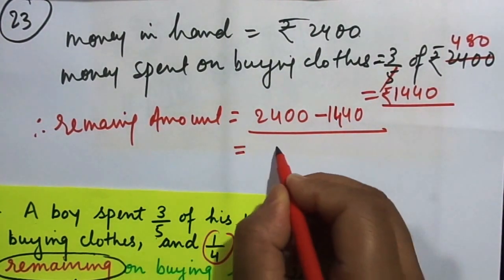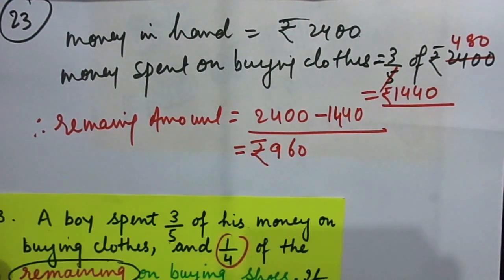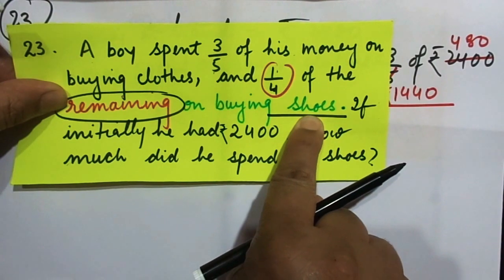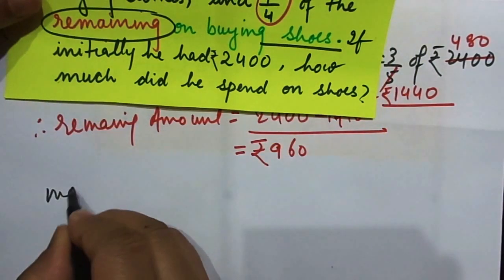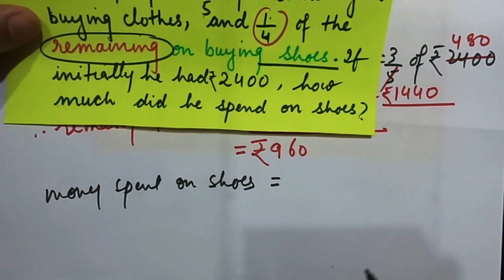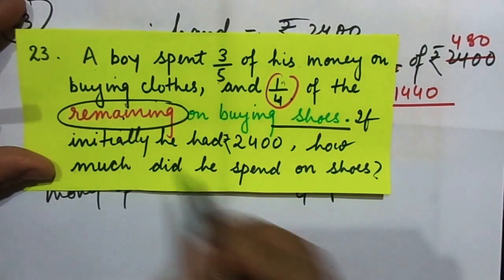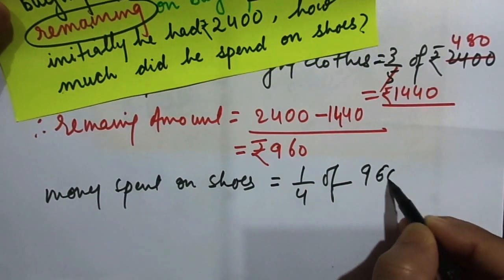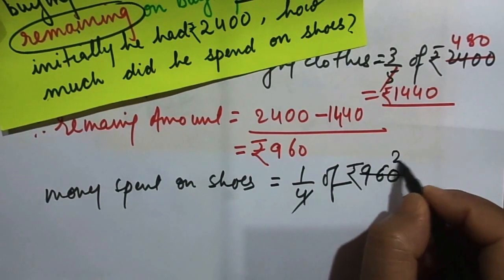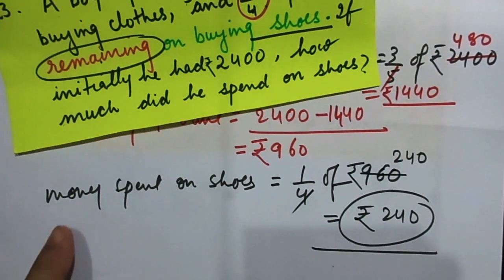So she had 960 rupees remaining. The boy spent 1 by 4 of the remaining on shoes. Money spent on shoes is equal to 1 by 4 of the remaining, which is 1 by 4 of rupees 960. Cancelling 4 into 240, this equals rupees 240. Therefore the boy spent rupees 240 on his shoes.